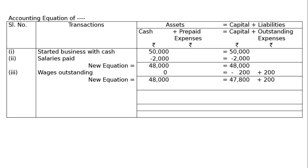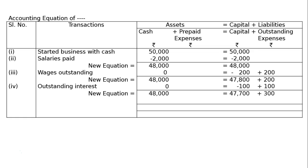Fourth transaction: interest due but not paid, rupees 100. Same thing — outstanding interest. There is no change in cash balance, but capital will be reduced by rupees 100 due to expenditure, and our outstanding expenses will increase. The new equation will be 48,000 equals rupees 47,700 plus 300.